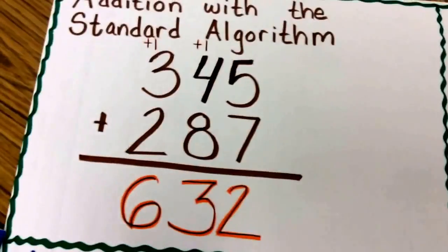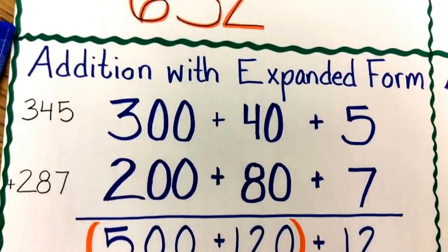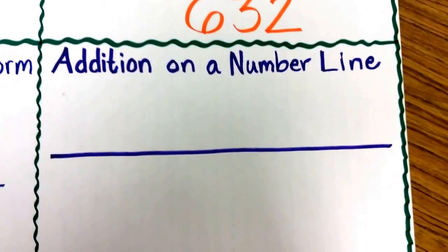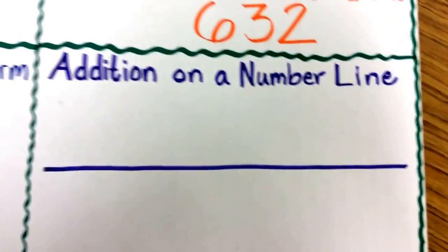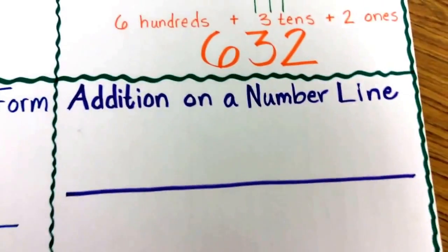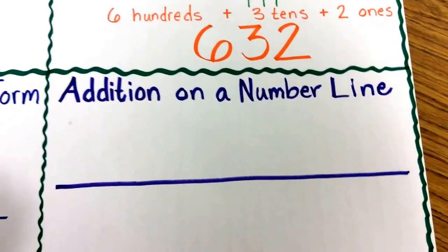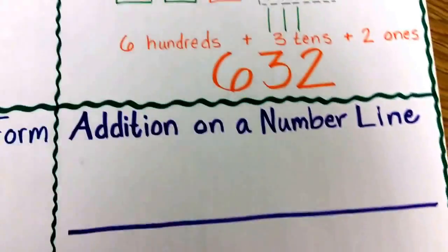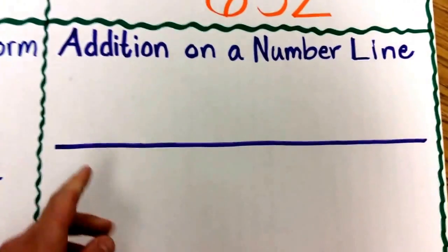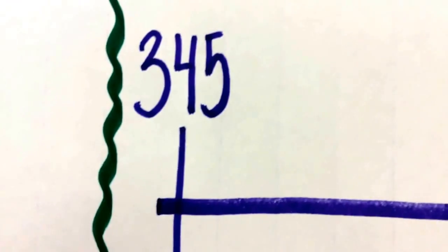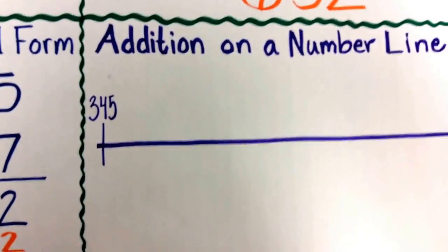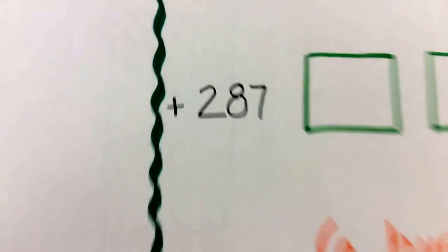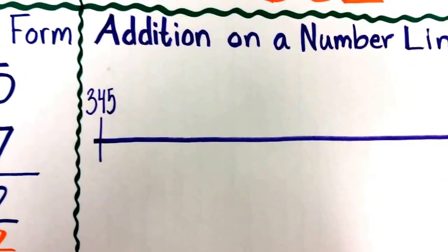But that leaves us with just three ways of adding. Let's have a fourth way — how about addition on a number line? Sometimes we think a number line must begin with zero on the left side. That's not always true. This number line is called the open number line. I can start it wherever I want. Since I'm adding, I'm going to start it where my biggest addend is. My biggest addend is 345, so I will begin my number line at 345. My next step is to add 287 to my 345 by doing some fancy skip counting.